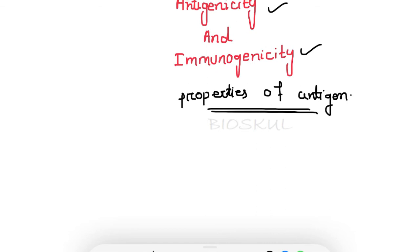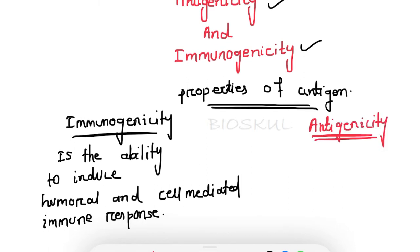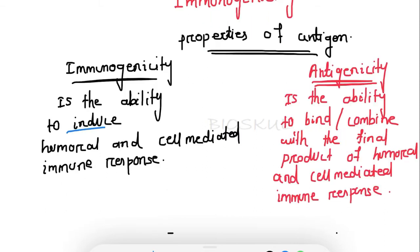Immunogenicity is the ability of a substance to induce cellular or humoral immune response. On the other hand, antigenicity is the ability to bind with the final product or the final result of the immune response. In immunogenicity, the body is actively working to generate the immune response.